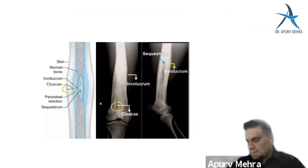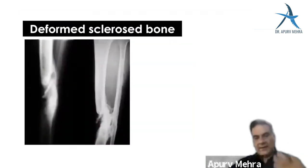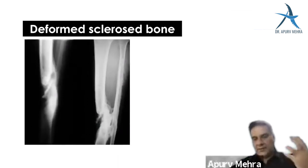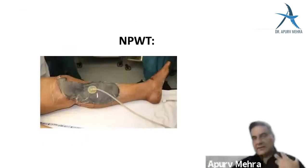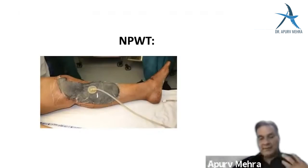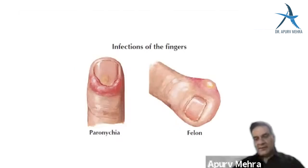Chronic osteomyelitis: a dead bone (sequestrum) lies in the center of a cavity; the surrounding sclerotic bone is the involucrum; the draining sinuses are called cloacae. The sequestrum is pathognomonic — if a child has pus discharge with bony spicules coming out, those spicules are the sequestrum. Dead bones are usually white. Osteomyelitis is the number one image asked. Negative pressure wound therapy (vacuum-assisted closure) is used to cover wounds over bone.